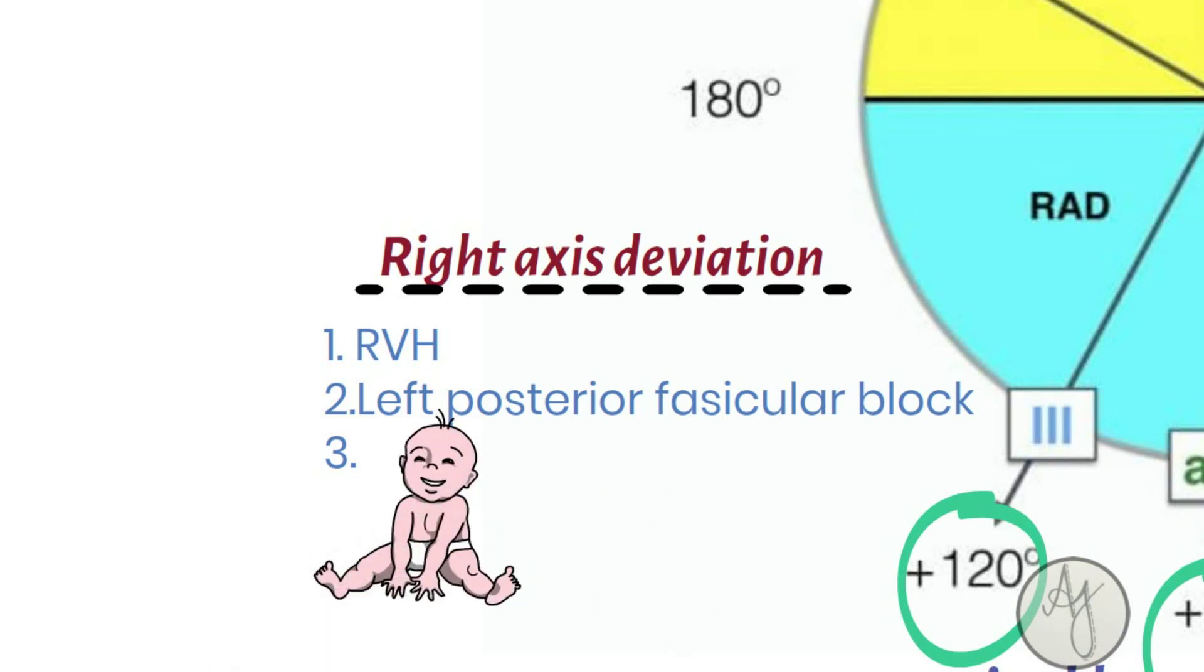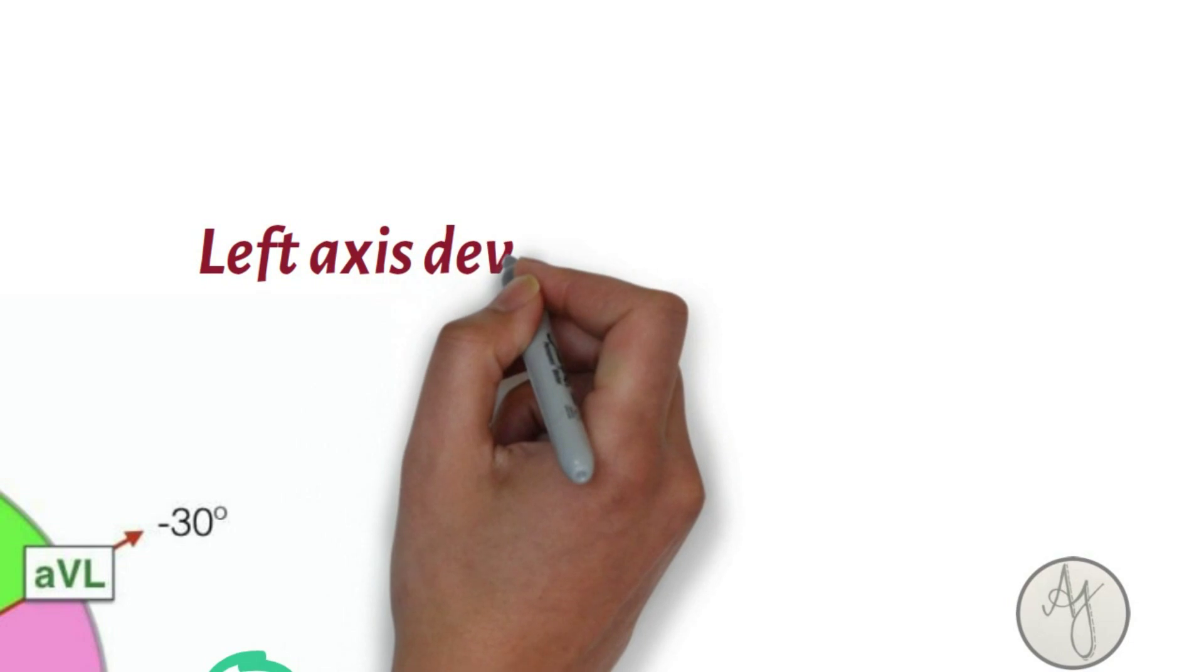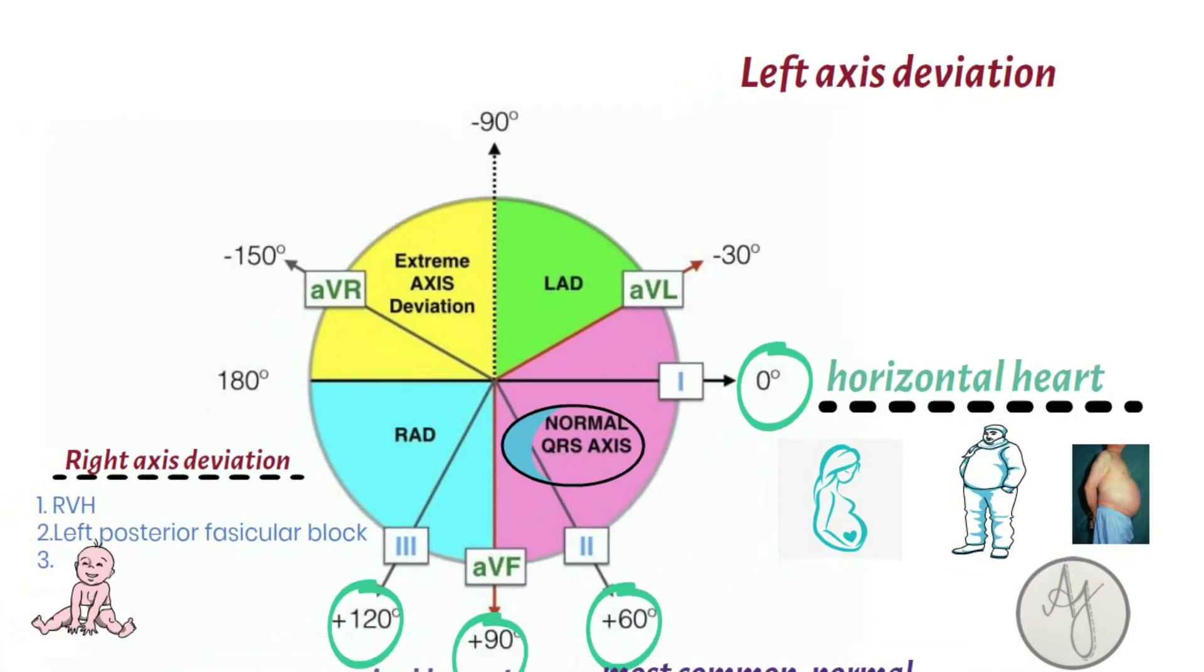What is the left axis deviation? If the heart is facing minus 30 degrees towards aVL, this is abnormal.